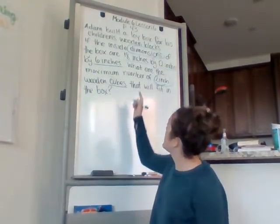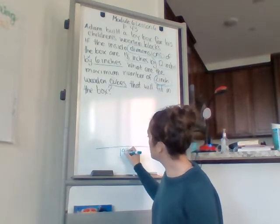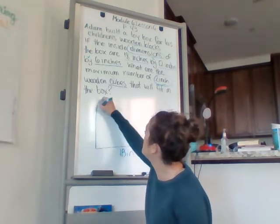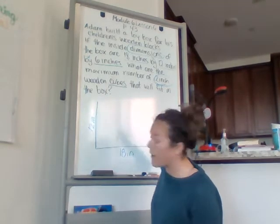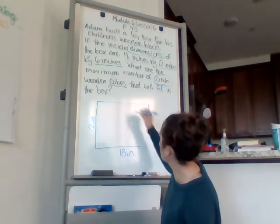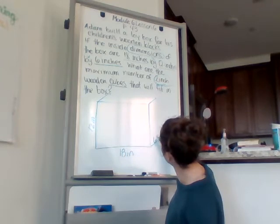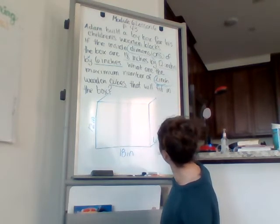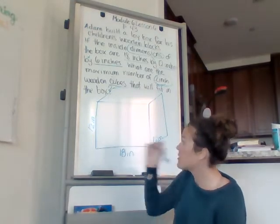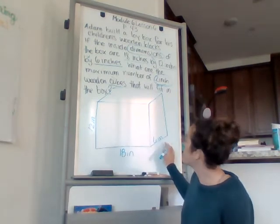So it says 18 inches, I'm going to label it 18 inches, by 12 inches by 12 inches. Okay. There's my box. By last measurement, 6 inches. All right. So here's my box. 12 inches by 18 inches by 6 inches.